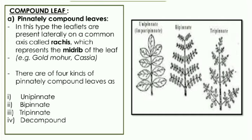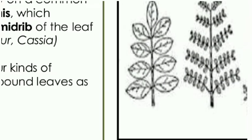There are four types of pinnately compound leaf: unipinnate, bipinnate, tripinnate, and decompound. In unipinnate, there is only one rachis which is unbranched. In bipinnate, the rachis produces smaller branches and the leaflets are produced on those branches — there is only one level of branching, with leaflets arranged on either side of each branch.